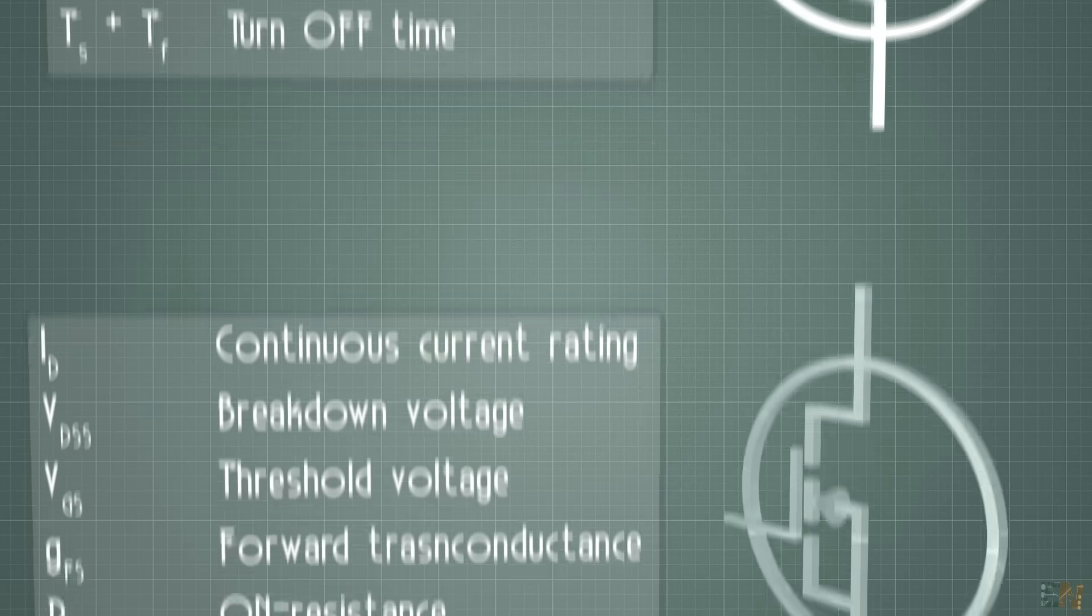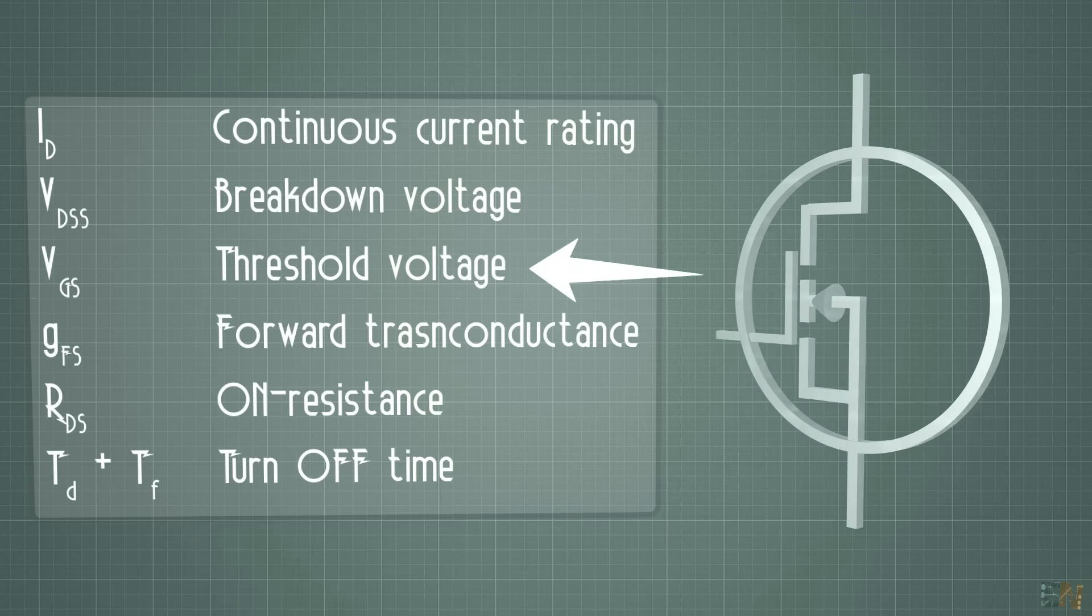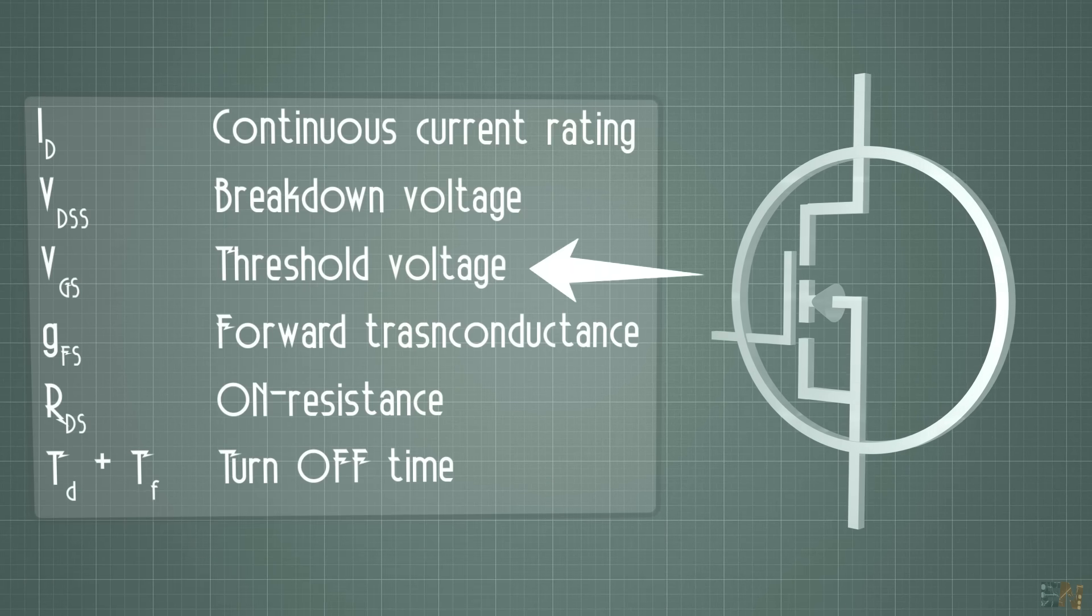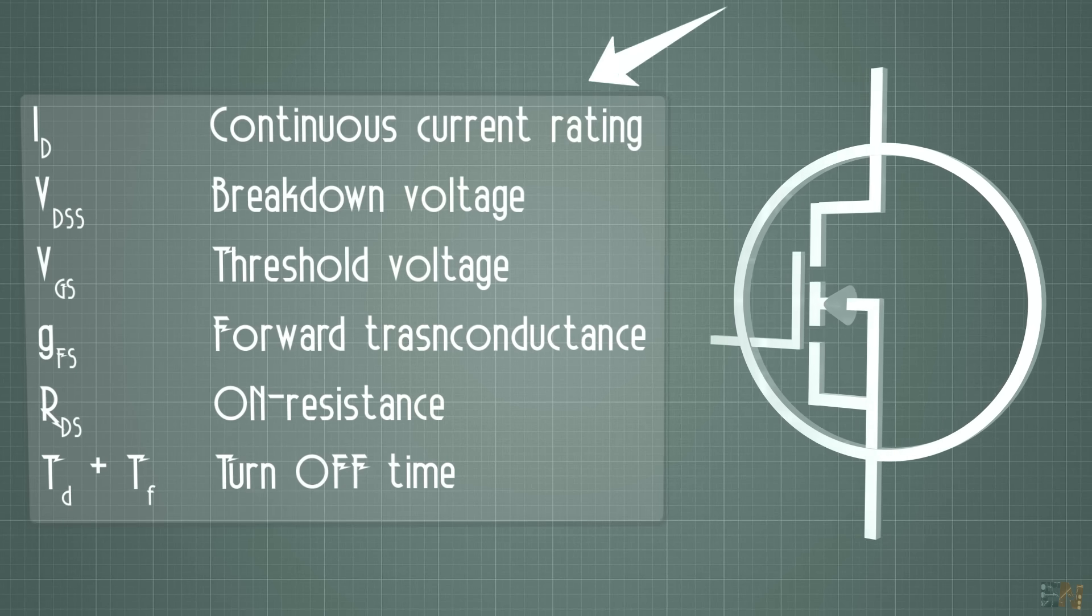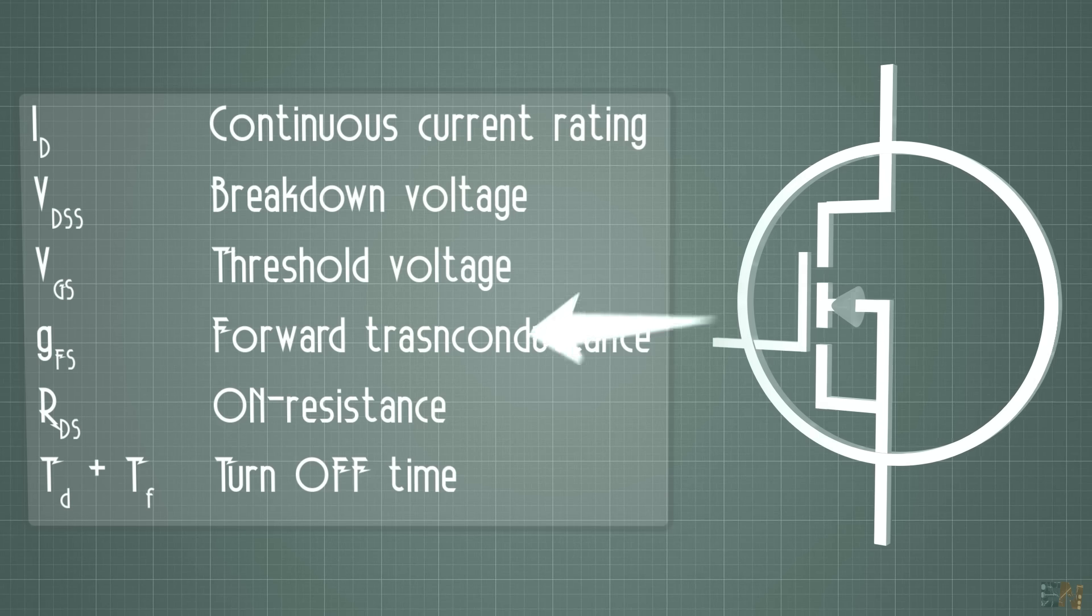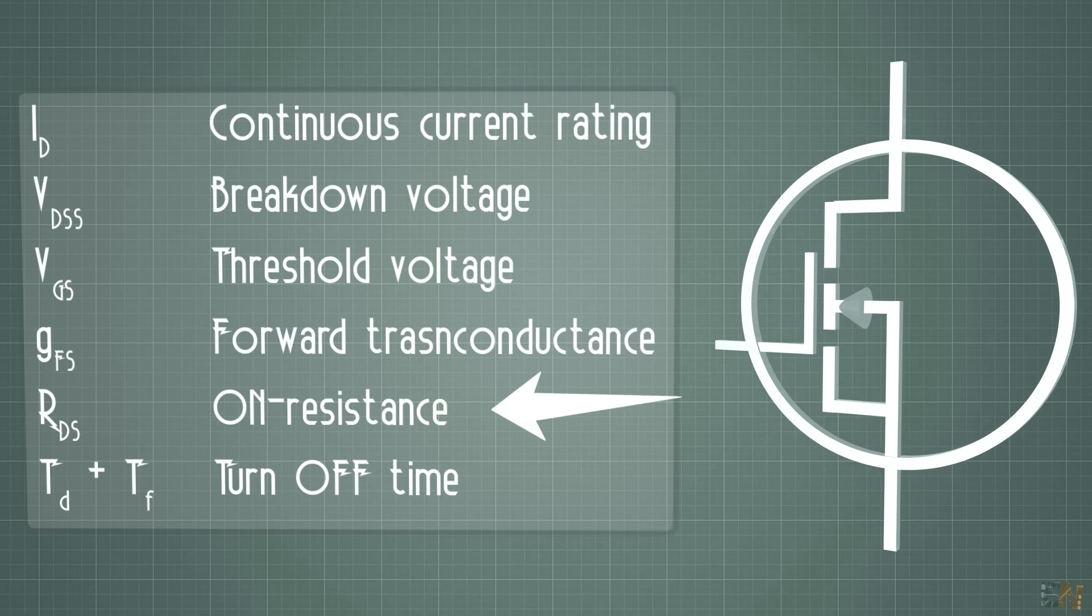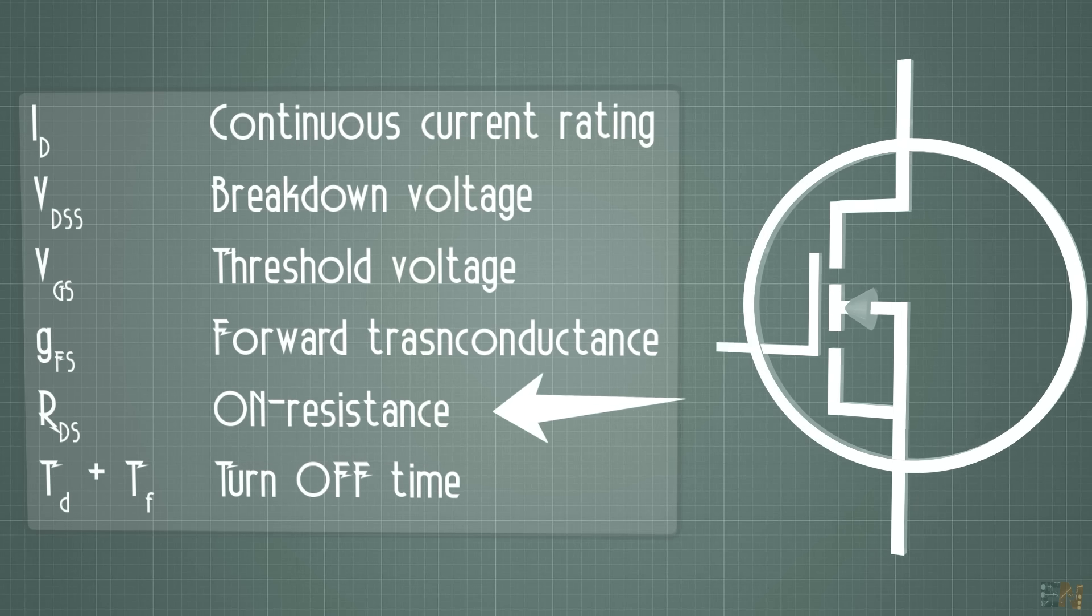For the MOSFET, you might want to check the threshold voltage, which is the minimum voltage between the gate and the source you have to apply in order to activate the component. Also check the current rating and the ON resistance for more complicated circuits where you must have that in consideration as well.